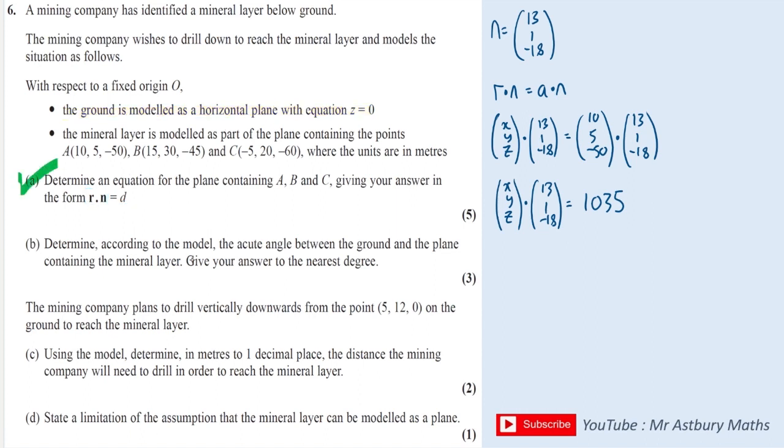Part B, it says, determine according to the model, the acute angle between the ground and the plane containing the mineral layer. So we've got the ground, which looks something like that, and then we've got some sort of mineral layer down here. And we know the normal of the mineral layer. We've worked that out. And we also know the normal of the ground, because it's going to be just vertically down, because we know the ground is completely flat.